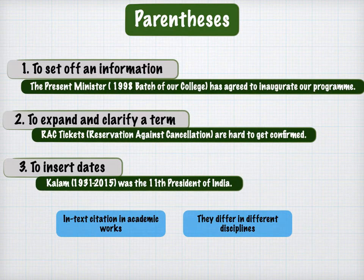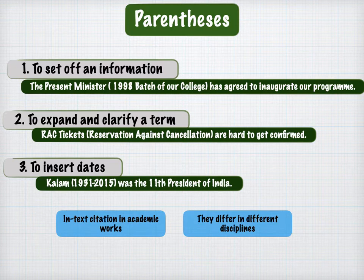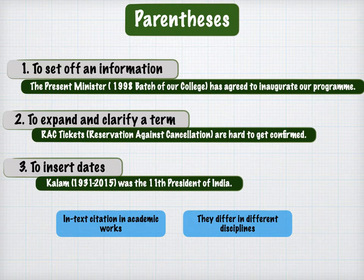We move on with the next one: parenthesis. Parenthesis is the curved bracket. The first situation in which a parenthesis can be used is to set off extra information. For example, 'The present minister has agreed to inaugurate our program.' This is a full sentence, but now you are giving additional information — in parenthesis, you are quoting '1998 batch of our college.' So this is extra information about the present minister.